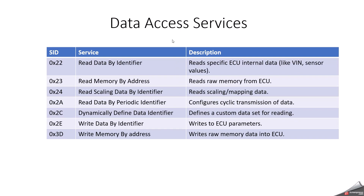Another category is Data Access Services, covering SIDs 0x22, 0x23, 0x24, 0x2A, 0x2C, 0x2E, and 0x3D — all related to data read and write. Service 0x22 is a very famous one: Read Data By Identifier, used to read data from the ECU. In 0x22, we configure a 2-byte Data Identifier, which is why it's called DID.